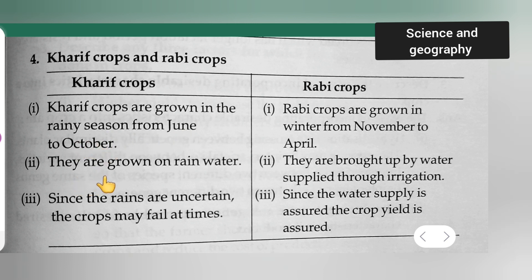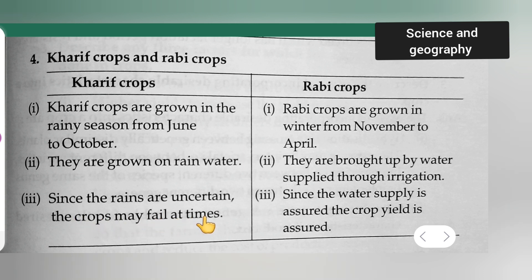The second point is they are grown on rainwater. Third point is, since the rains are uncertain, the crops may fail at times. Next is the Rabi crop — Rabi crops are grown in winter from November to April.